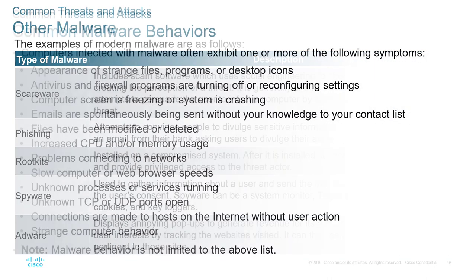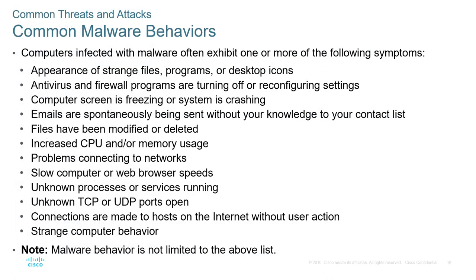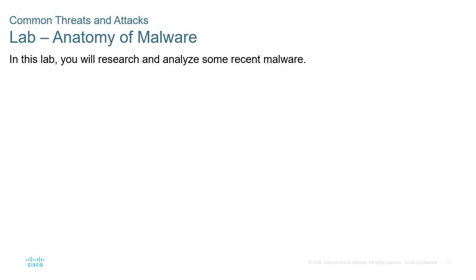Common malware behaviors include: strange or changing desktop appearance; antivirus and firewalls being turned on and off; systems running extremely slow, freezing, or crashing regularly; email spontaneously being sent without your knowledge — a telltale sign of malware; files being modified or deleted; high memory and processing usage; network connectivity issues; slow web and file browser speeds; unknown random ports opening; processes listening on unusual ports; and just general weird behavior. There is a lab on researching forms of malware — make sure to get that done.